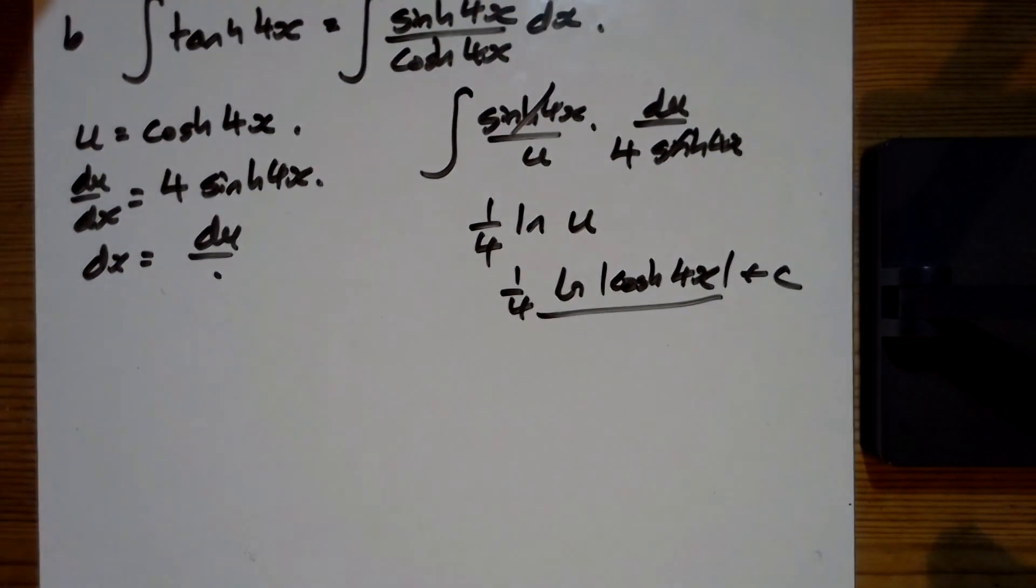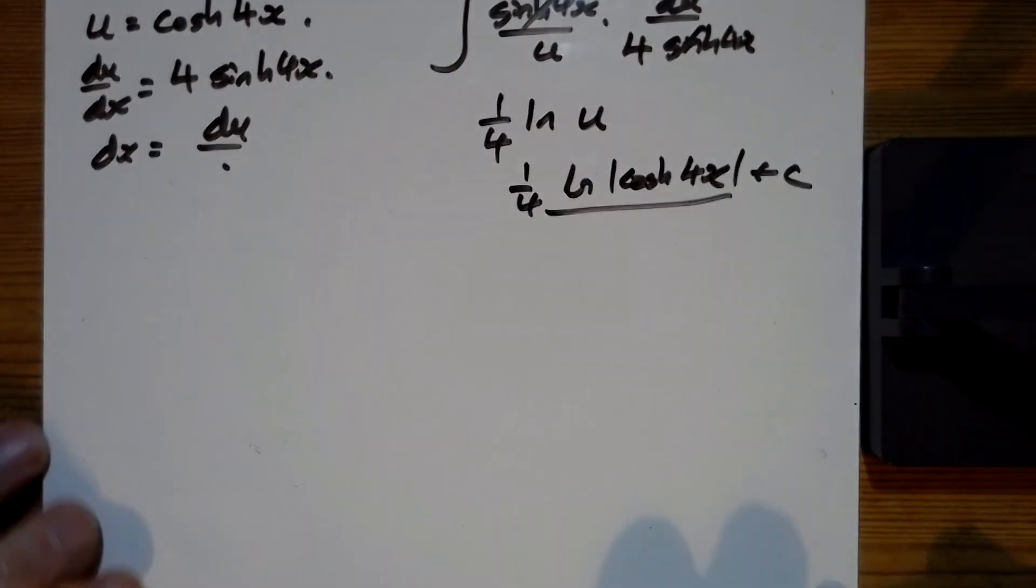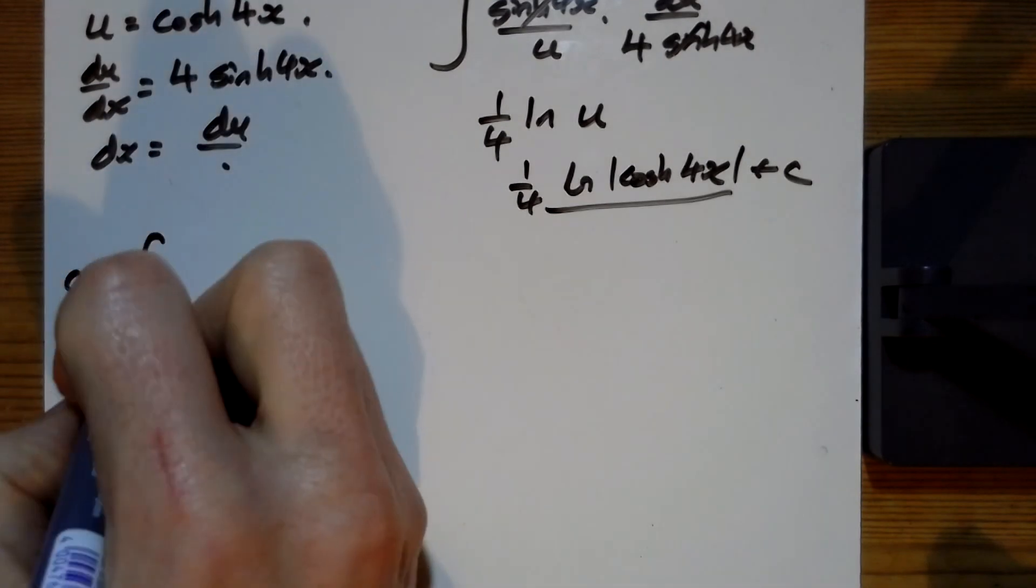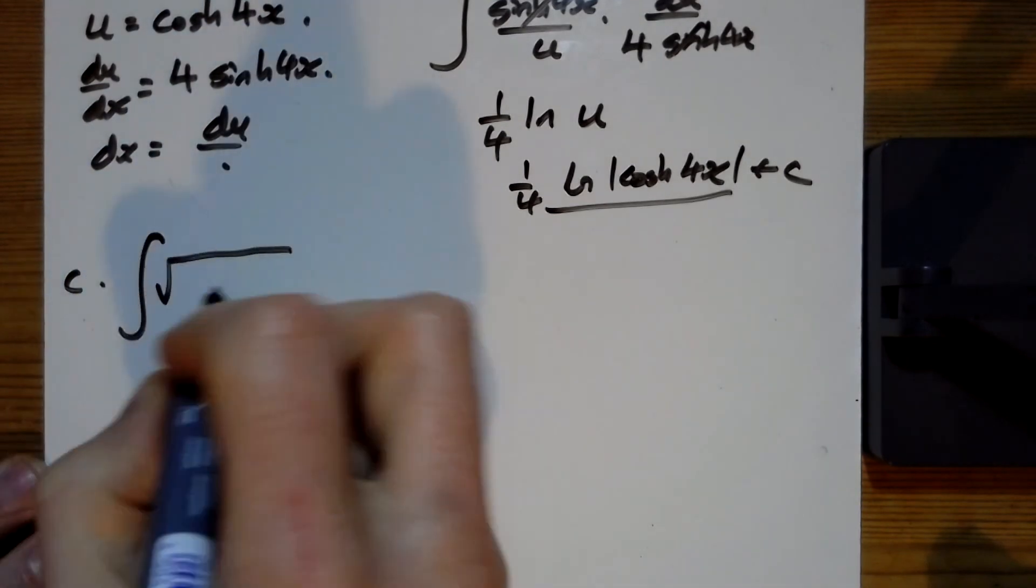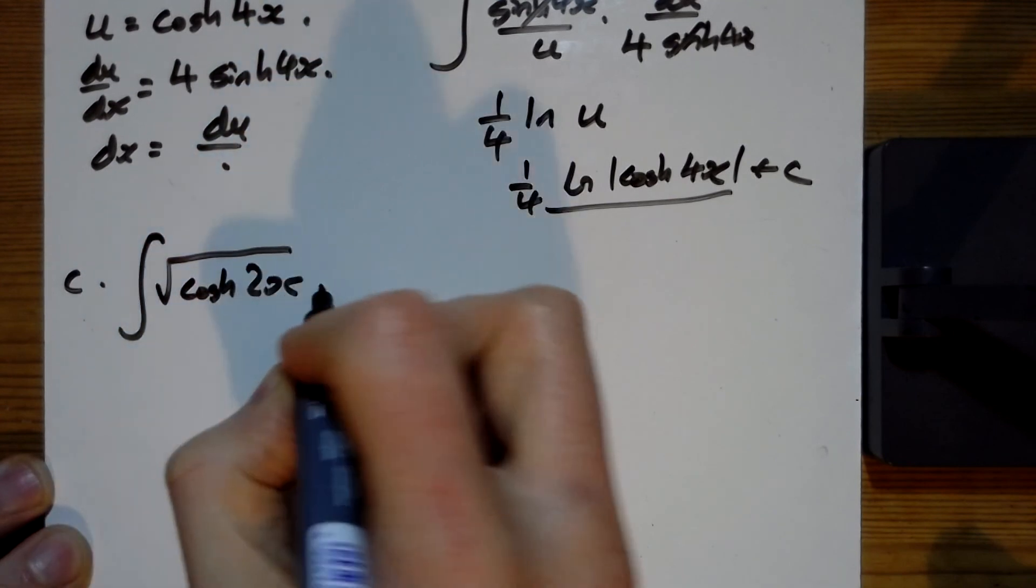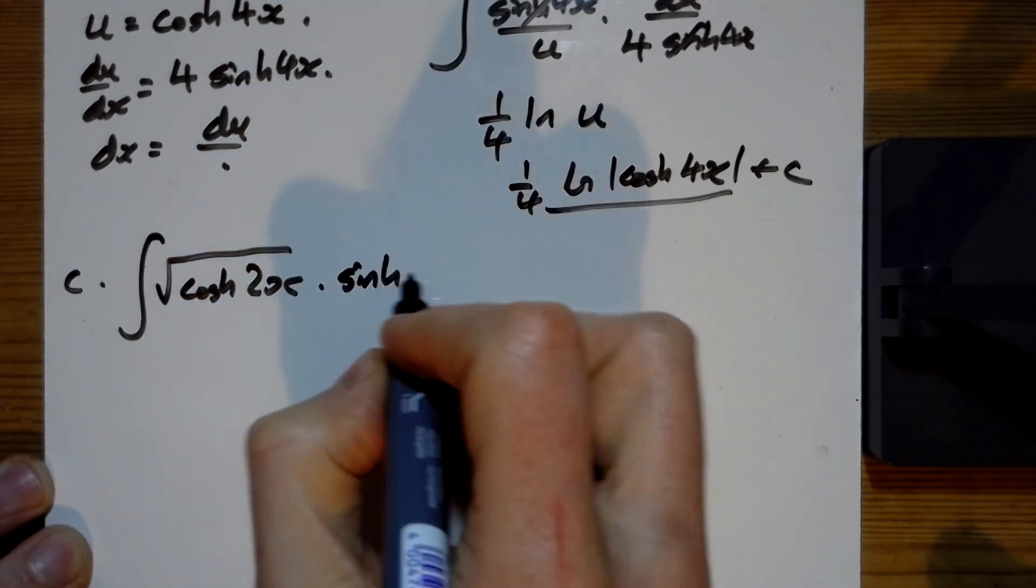Unwisely, I'm going to try and get the last one in here as well, and you know I'm going to go wrong in the middle of this video. So we're trying to do the integral of the square root of cosh two x, and then a sinh two x there.